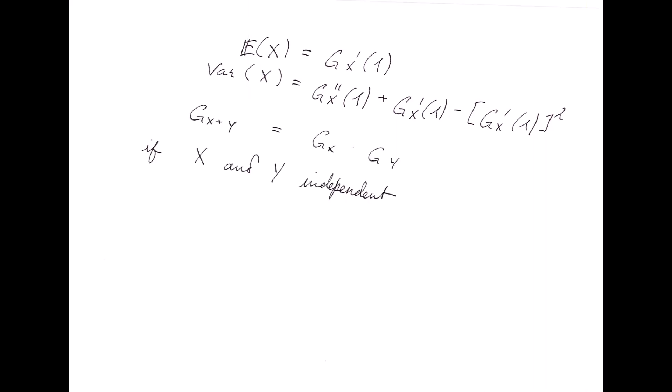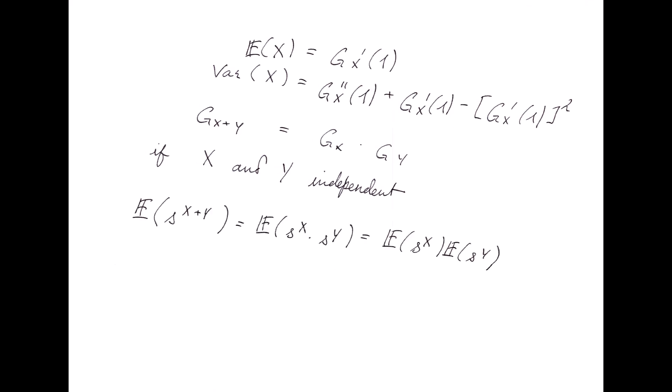So, as a first result, we have that the generating function of X plus Y is equal to the product of the generating function of X times the generating function of Y if X and Y are independent. Although we might have already been able to compute the expectation of the sum of two random variables without considering generating functions, this provides us a venue for computing individual probabilities of getting certain values.